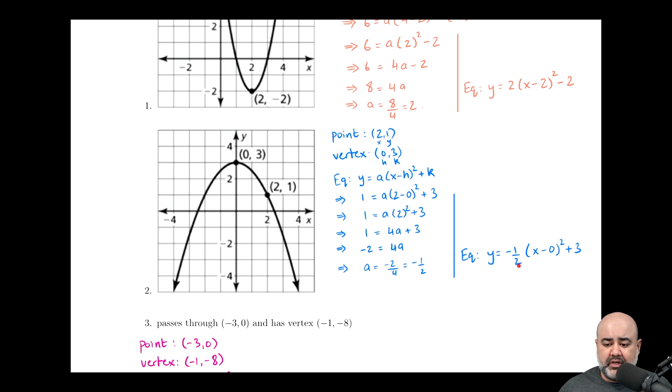So as before, we have our equation in vertex form, y equals a, which is negative one half, we just figured it out, times the quantity x minus h, which is zero, the quantity squared plus k, which is three from right here. And this is our equation in vertex form.